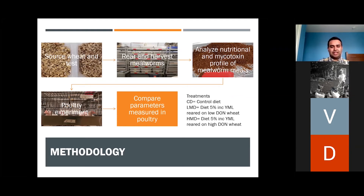A control diet which was an industry standard diet. LMD, which is a diet containing five percent mealworm meal reared on low DON wheat. And HMD, which was a diet containing five percent mealworm meal produced on high DON wheat. Some of the parameters that we measured in the poultry included crude protein retention, dry matter digestibility, feed intake, body weight, meat yield and organ weights.